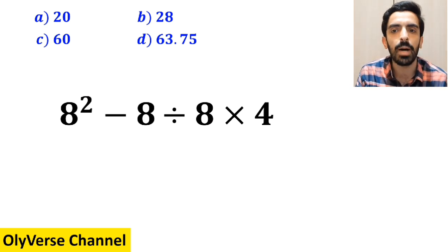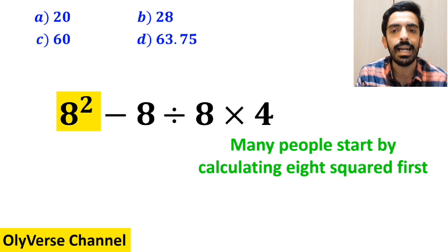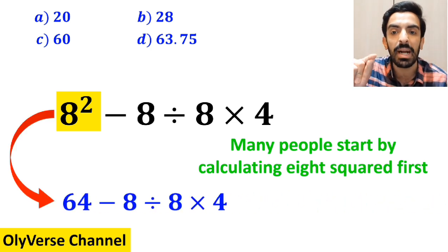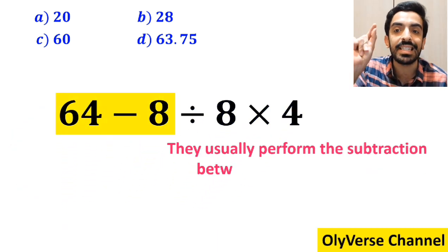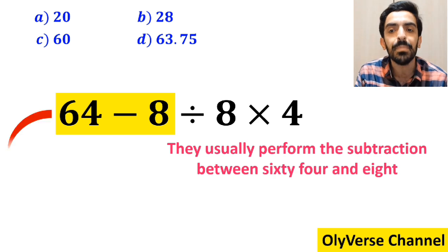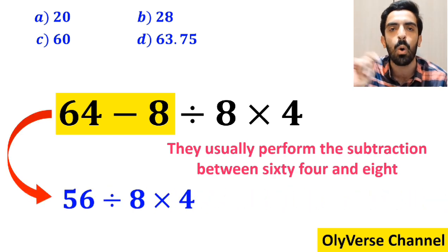To solve this problem, many people start by calculating 8 squared first and instead of the original expression, they rewrite it as 64 minus 8 divided by 8 then times 4. In the next step, they usually perform the subtraction between 64 and 8 and simplify this expression to 56 divided by 8 then times 4.